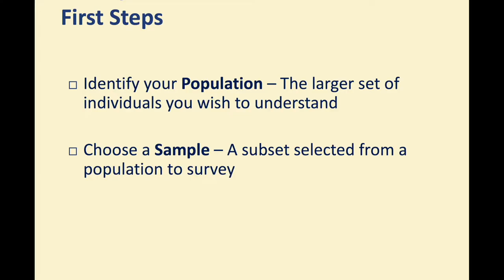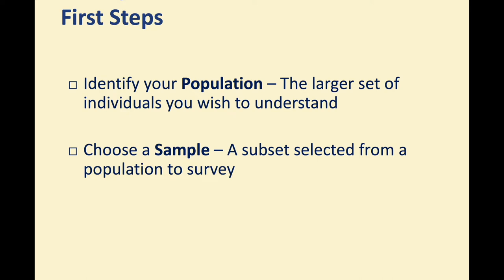Up next is the survey administration. The first thing we need to do is identify our population — the larger set of individuals you wish to understand. For example, if we want to understand moviegoers in general, that's our population: anybody who has seen a movie. We then narrow that down by choosing a sample, which is a subset selected from that population — for instance, moviegoers in Atlanta or Los Angeles. That's still a pretty big sample, but you could narrow it down further.